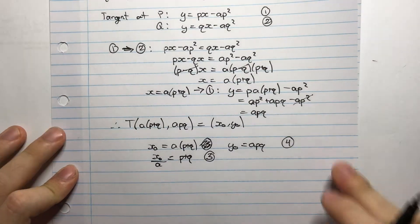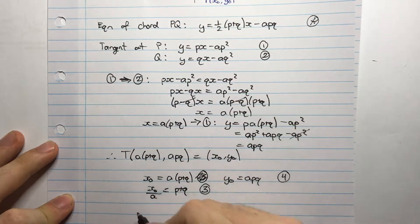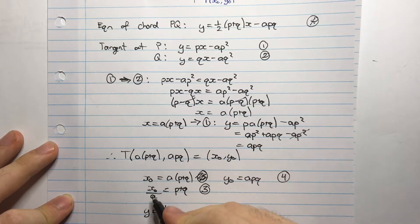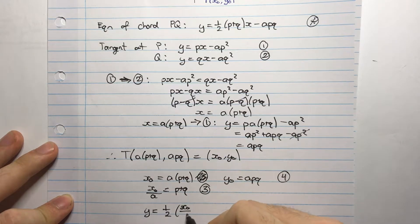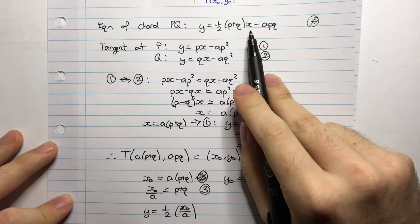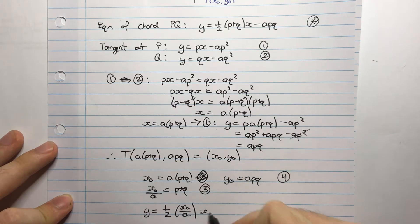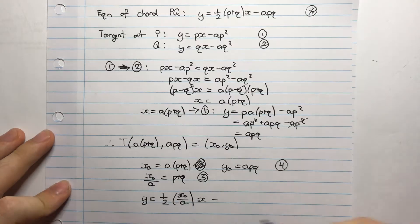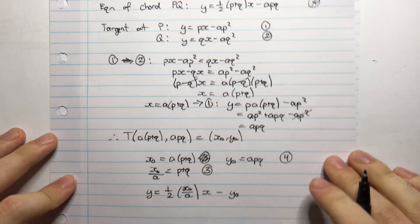Okay, substituting back in. So where are we? Substituting in here, I have Y equals a half. Now P plus Q is X0 divided by A, multiplied by X minus APQ. Well, APQ is precisely Y0, so that's convenient. I have Y0.